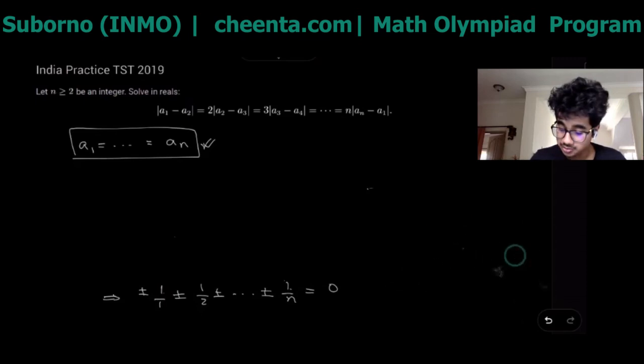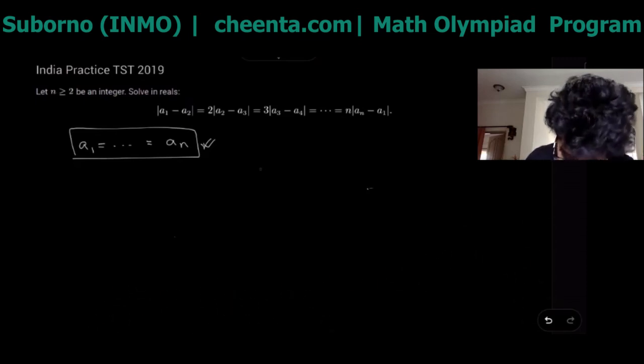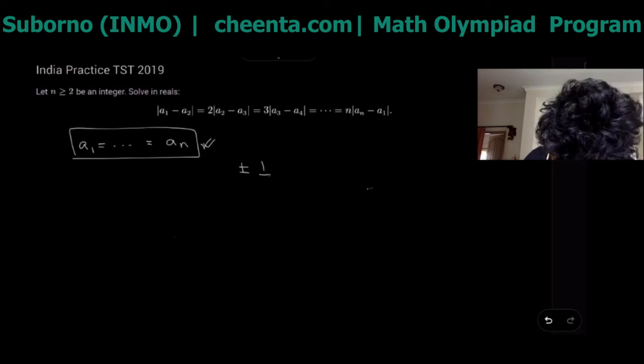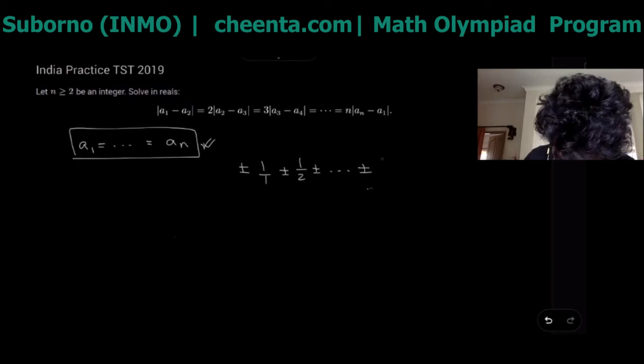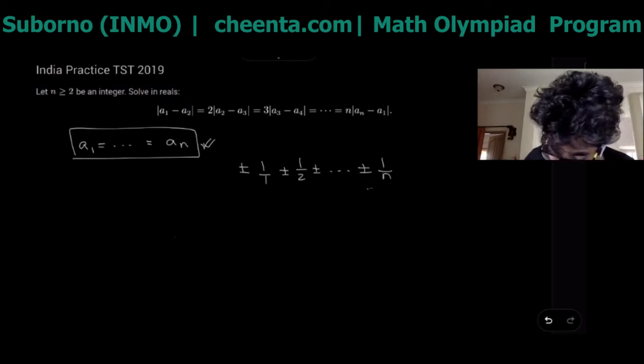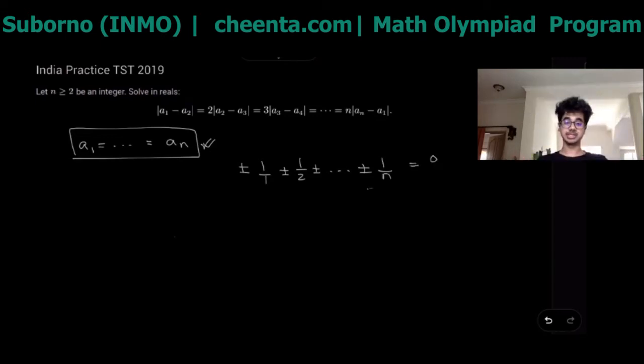If you cancel out k everything becomes one because k equal to zero was already dealt with to get the solution which was all equal. So we have this equation. We are left with this equation plus minus one over one and we need to see if this ever has any solutions.